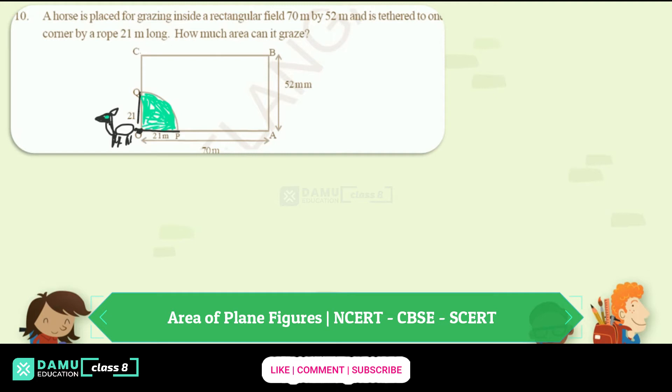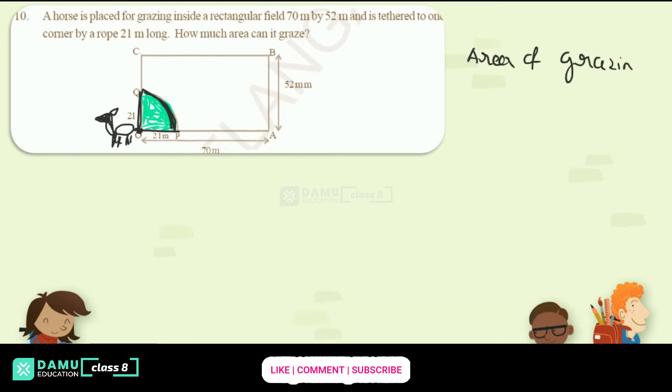Only this much area. So if you find this area of sector then easily we can find. So area of grazing field will be equal to area of sector.